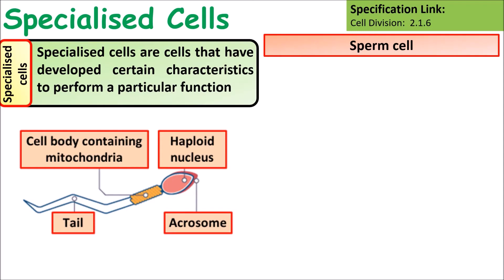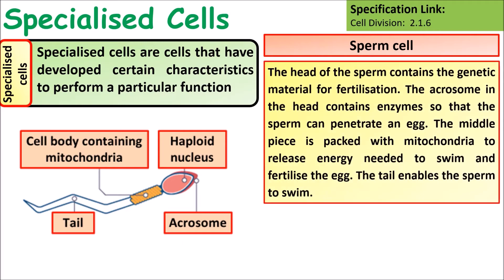Looking at specialised cells, the first is the sperm cell. It has a head containing only half the genetic material. It has an enzyme at its tip called the acrosome that helps break down the outer membrane of an egg cell, enabling it to enter. It also has lots of mitochondria which provide the energy required by the tail, enabling it to swim.